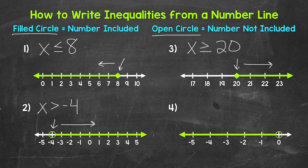And lastly, number 4: we have an open circle at 0, so 0 is not a solution — it's not included. And then the arrow points to the left towards all of the numbers less than 0. So x is less than 0.